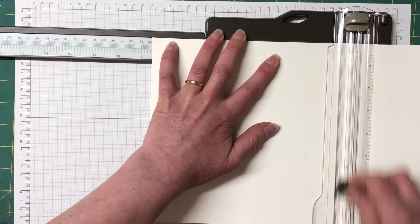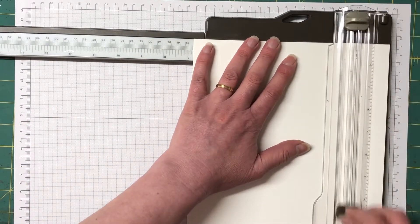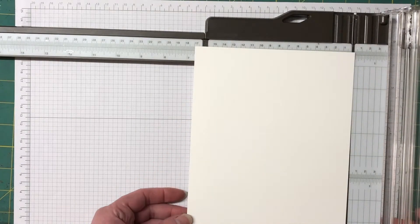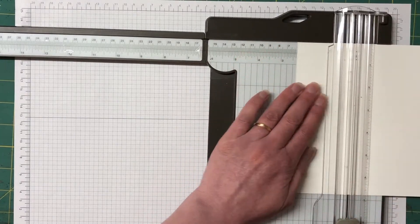Okay to make the boxes we're using thick whisper white cardstock. It measures eight and a half by six and three quarters and we're going to score them on the eight and a half inch side at two inches, four inches, six inches and eight inches.